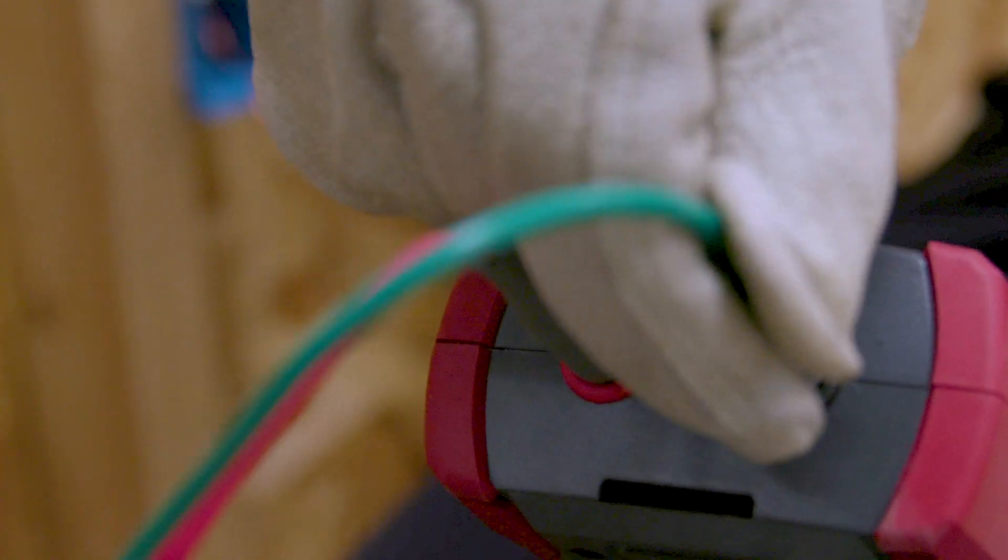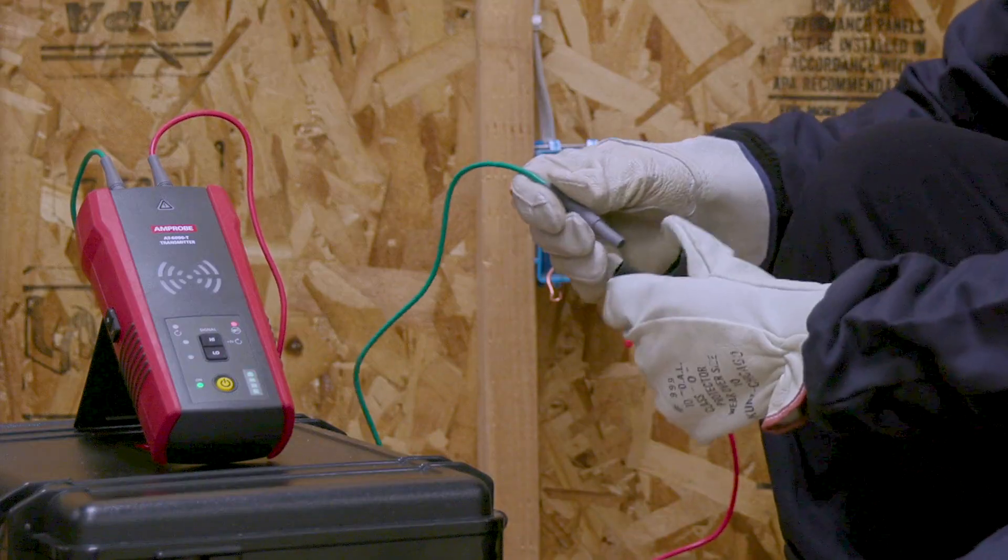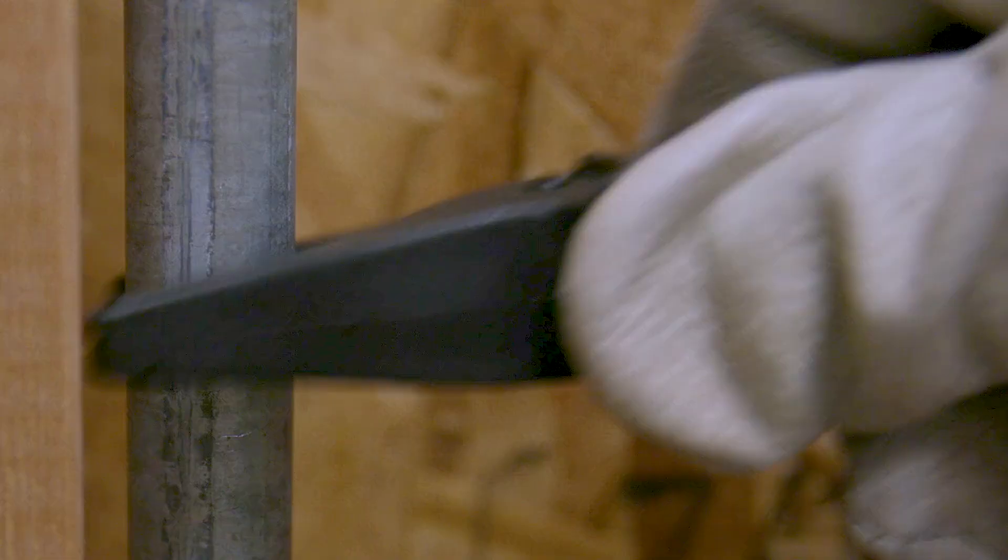First, set up the transmitter. Connect the test leads to the transmitter and press the power button. Connect the green lead to a separate ground to avoid signal coupling.